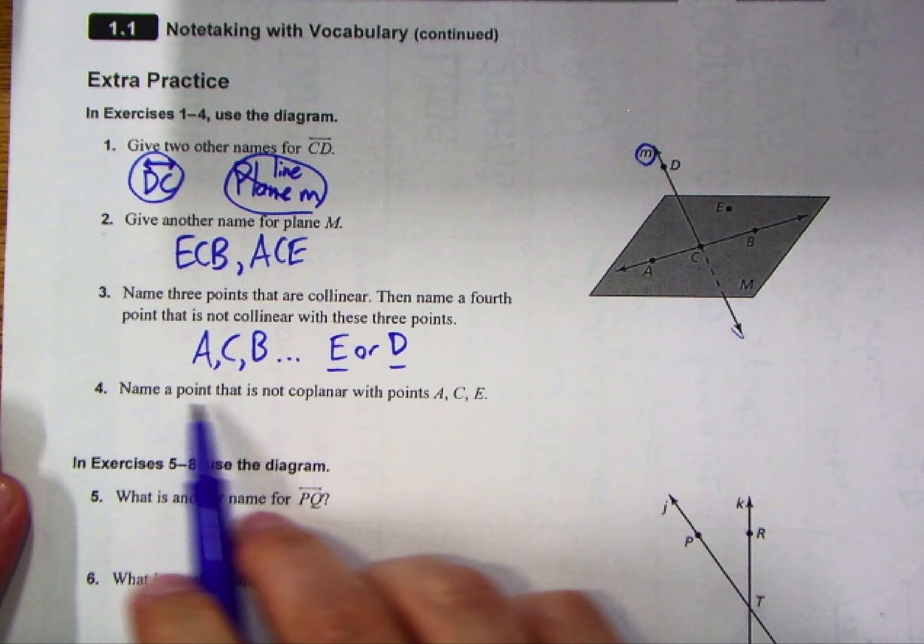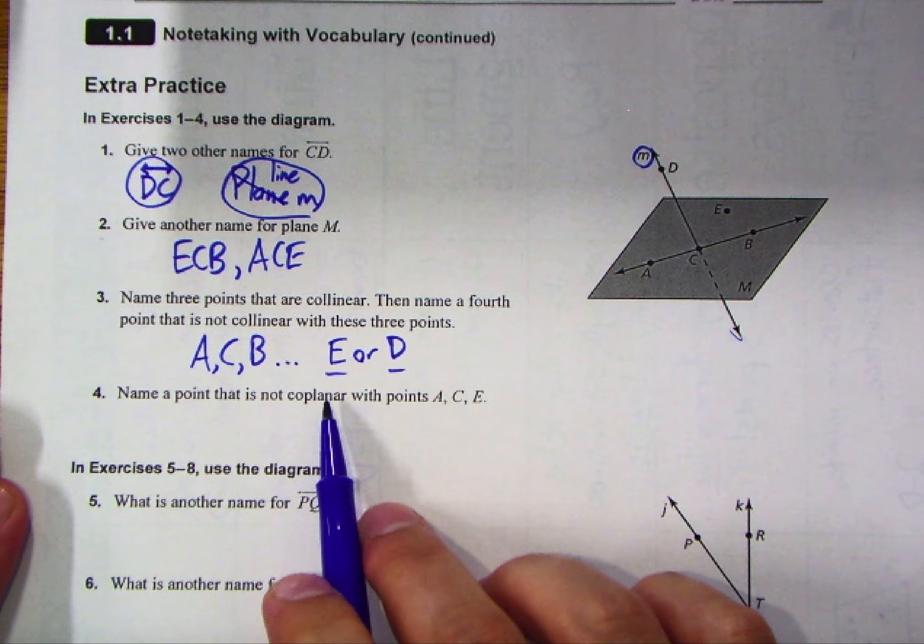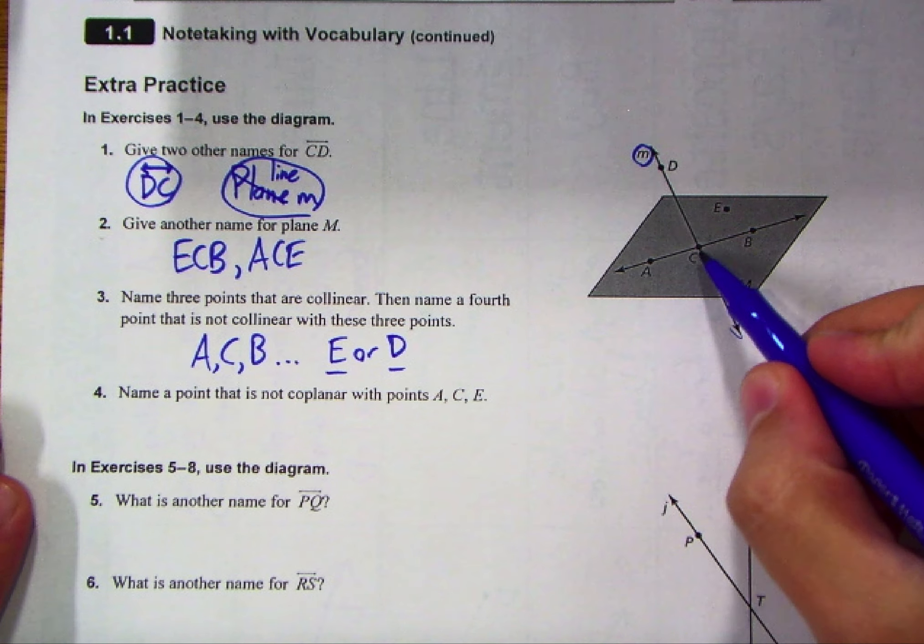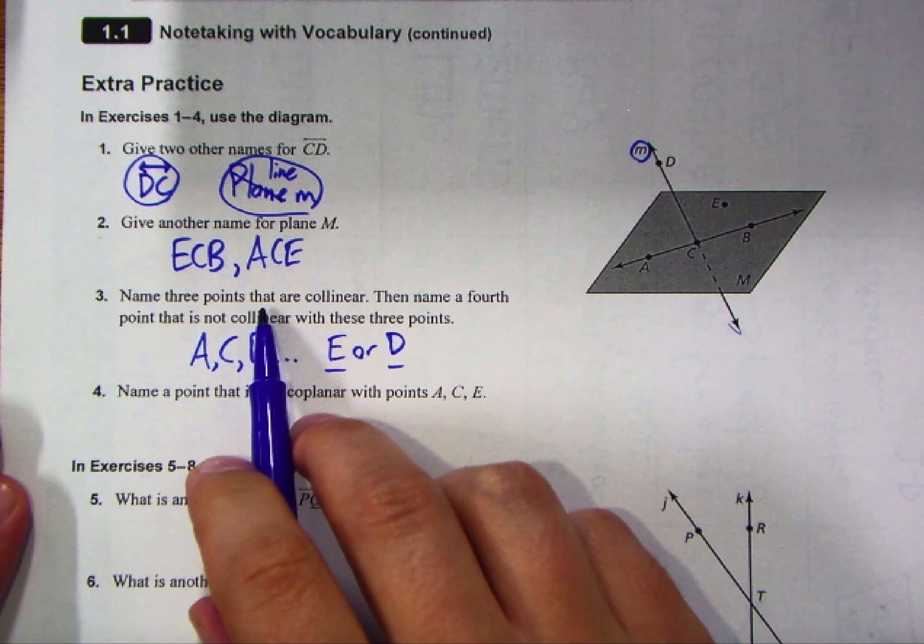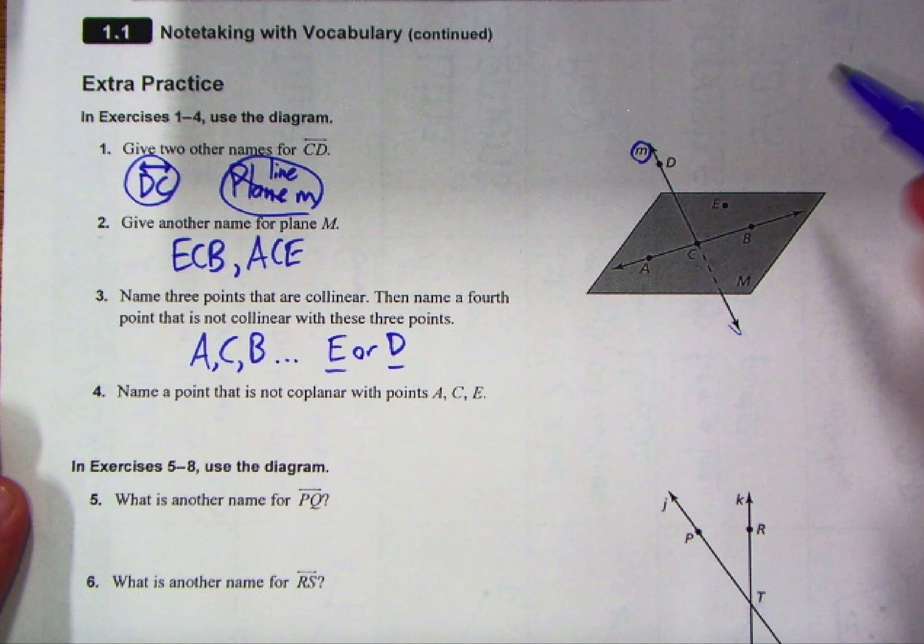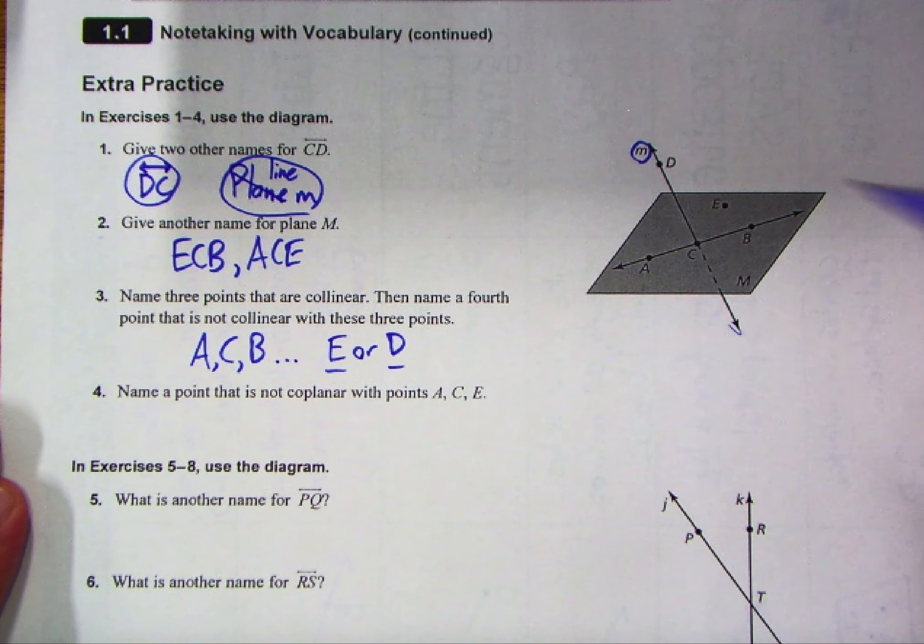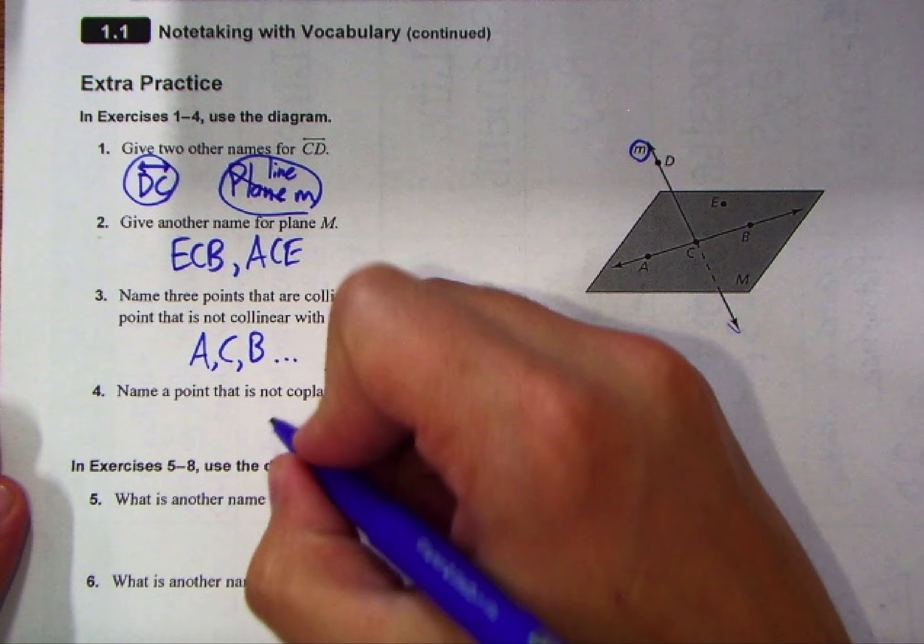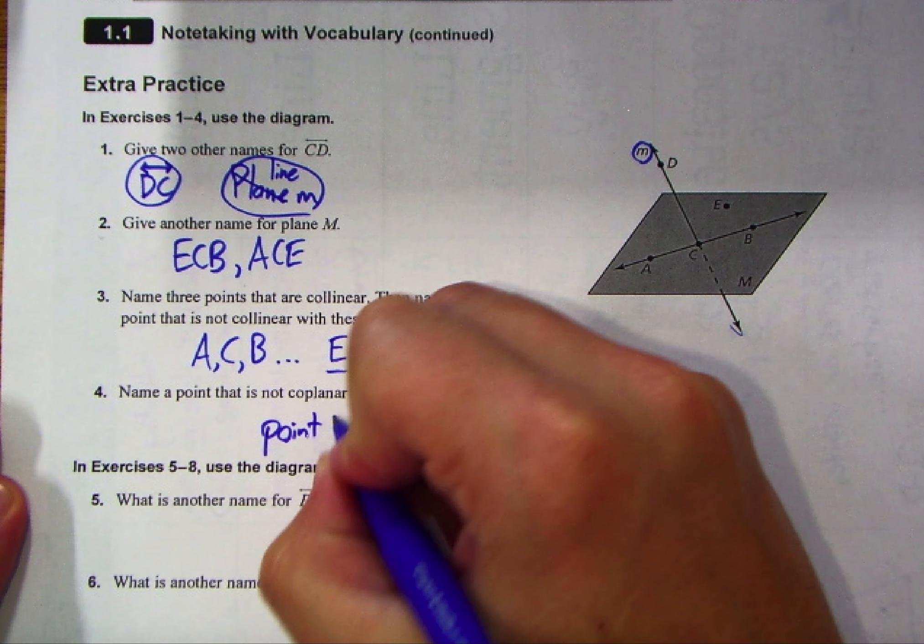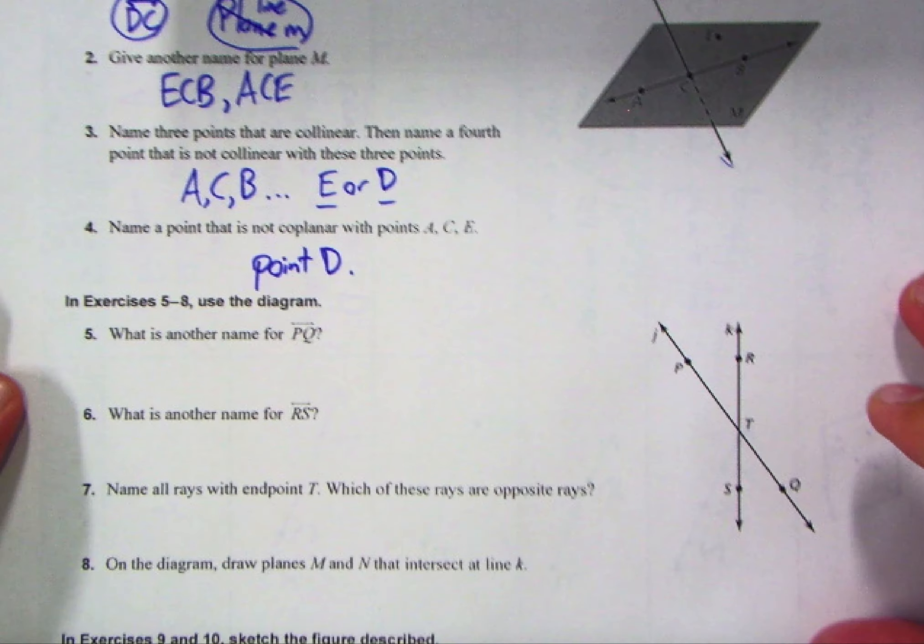Next up on number four, name a point that is not coplanar, not together on a plane with points A, C, and E. Well, A, C, and E, we said above, that's actually plane M, right? So if it's non-coplanar, I can't pick E, B, C, or A because all four of those are on this plane. Well, that only leaves us with one point that was not on the plane, right? Point D. So again, those are the basics of naming structure for some of these first diagrams we're looking at.